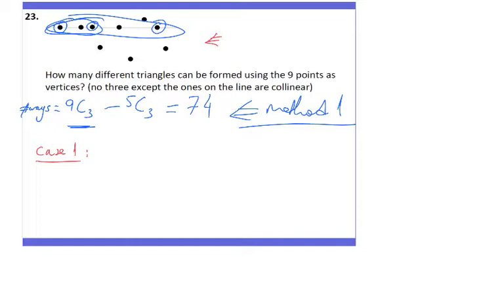In Case 1, I make triangles choosing no dots from the straight line. That means I have four dots not on the straight line, and the number of groups of three I can choose from those four dots is 4C3, which equals 4.